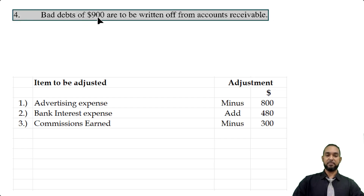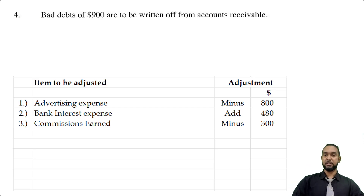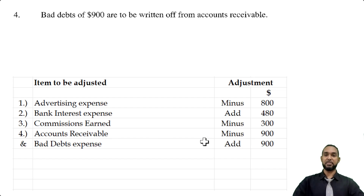Item four says bad debts of $900 are to be written off from accounts receivable. If accounts receivable has some uncollectable debts and we're writing them off, accounts receivable is going to come down. So we're going to see accounts receivable minus $900. I also included bad debt expense at $900 because the accounts receivable is going down and something has to counterbalance that, and that's the bad debt expense.